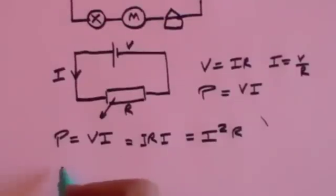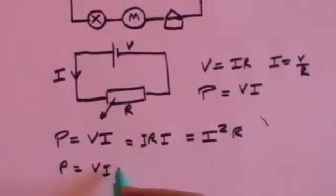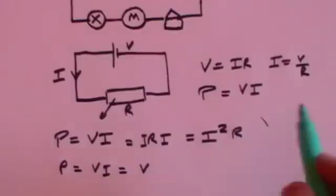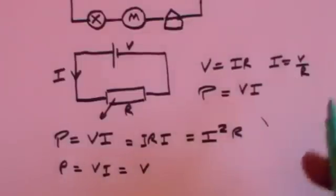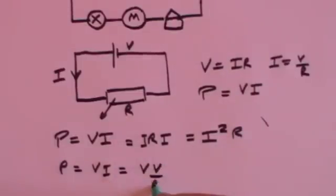And that means I can now write that power equals VI, which is V times I, but I is V over R. So it's V times V over R, which is V squared over R.